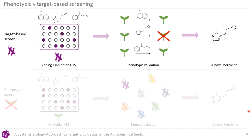Focusing on herbicides — if you want to develop a new herbicide there are a couple of approaches. One is similar to what is used for medicines: a target-based screen, where you've chosen the protein you'd like to target, perhaps inhibiting an enzyme or disrupting a protein-protein interaction. You do an in vitro screen with a variety of chemistry and look for hits. Then you need to go on to phenotypic validation, and this is where you can see a high attrition rate.